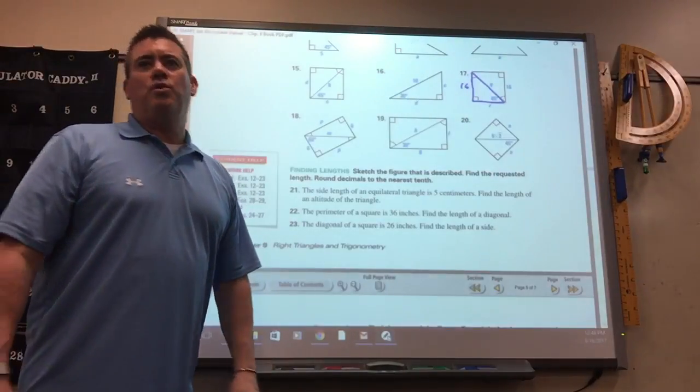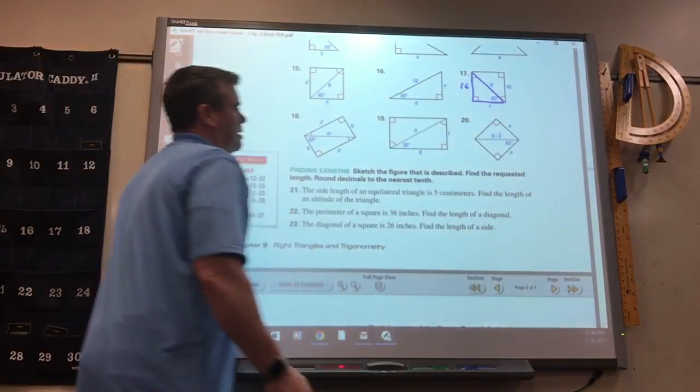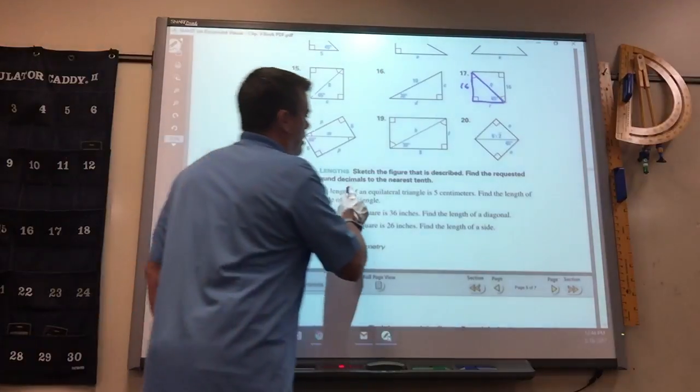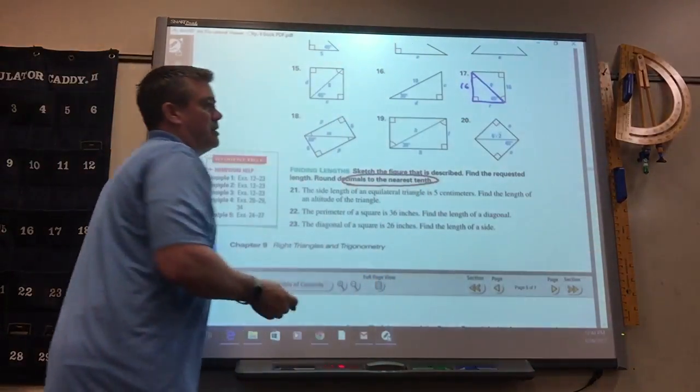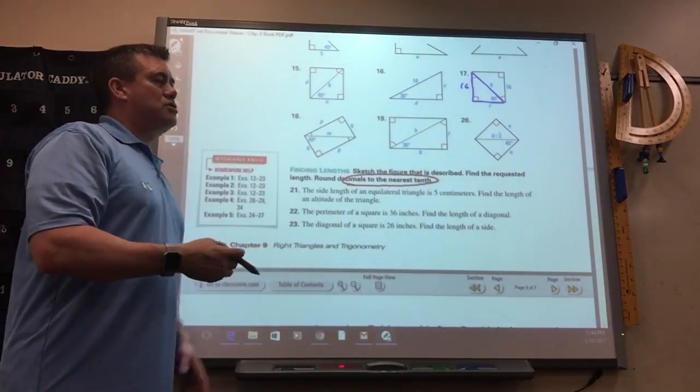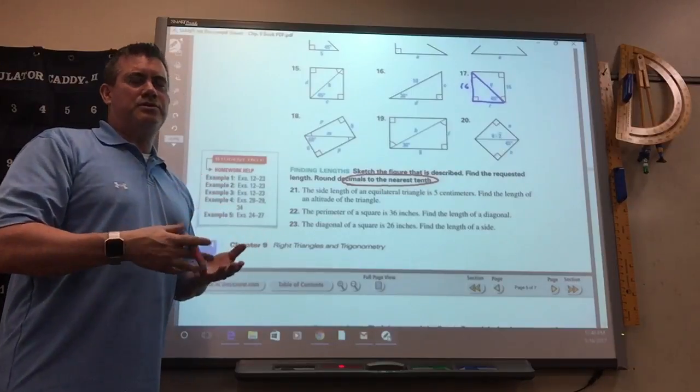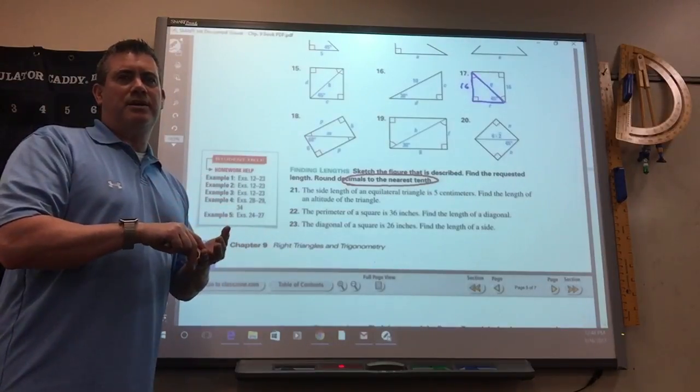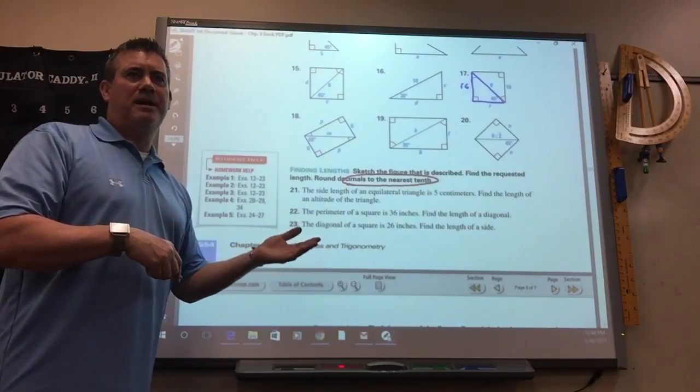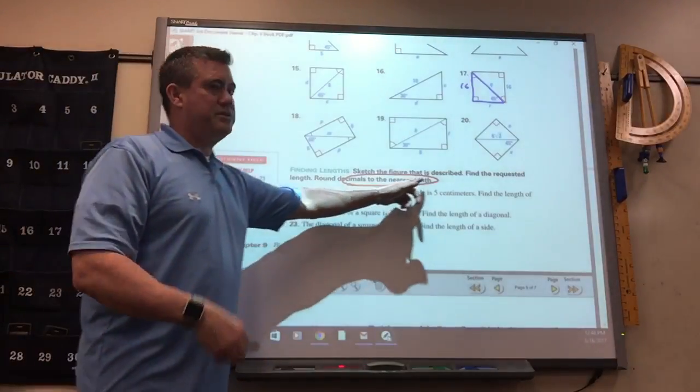Now, the last two, they want you to round to the nearest tenth. So that means if you get six square roots of two for your answer, you've got to punch it in a calculator, like we've been doing in the past, and round to the nearest tenth.